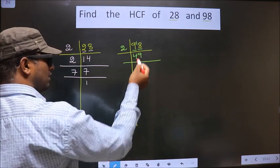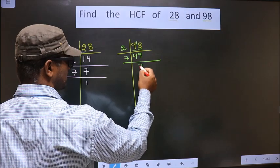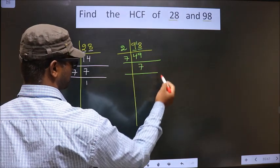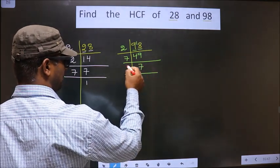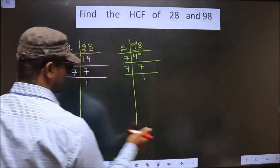Now, here we got 49. 49 is nothing but 7 square, so 7 sevens 49. Now, 7 is a prime number, so 7 and 1.